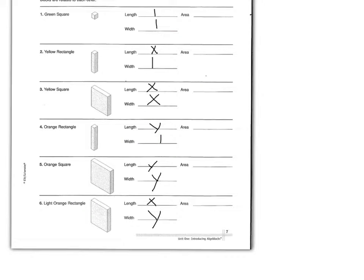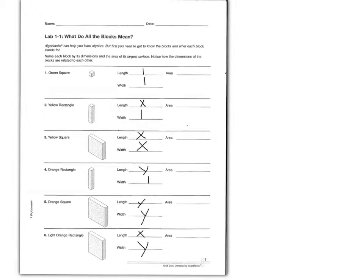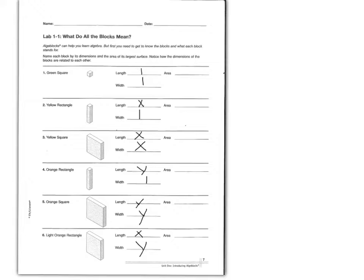The first thing we're going to do is identify these blocks. You should also have a box of algebra blocks next to you while you complete this lesson. Some of you could also use good notes later as a means of solving equations with tiles — some people call them algebra tiles — but we're going to use algebra blocks. We need to get to know each block and what it stands for. Name each block by its dimensions and the area of its largest surface.